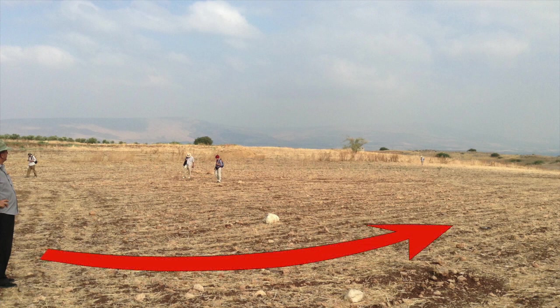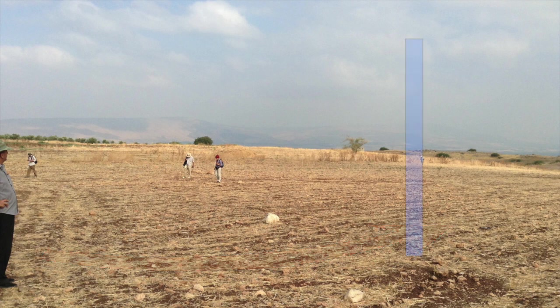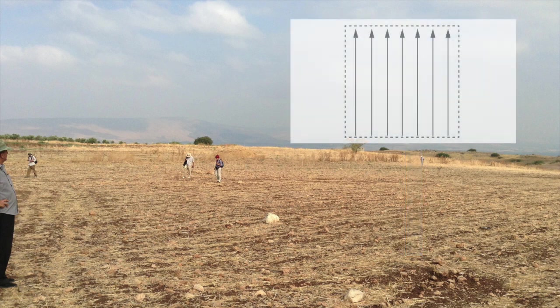Field walking typically involves transects, which we often conceptualize as elongated rectangles. However, survey projects often cluster these transects within some kind of sampling unit, which is often a square but can be a more irregular shape.